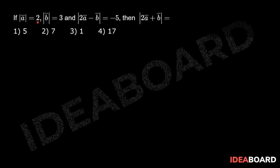If mod a bar equal to 2, mod b bar equal to 3, and modulus of 2a bar minus b bar equal to minus 5, then modulus of 2a bar plus b bar equal to?